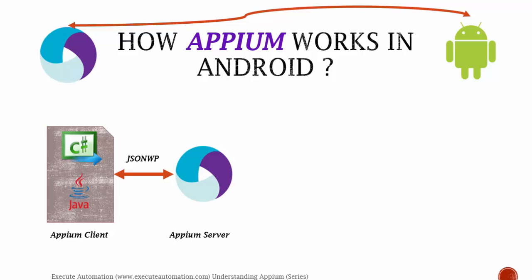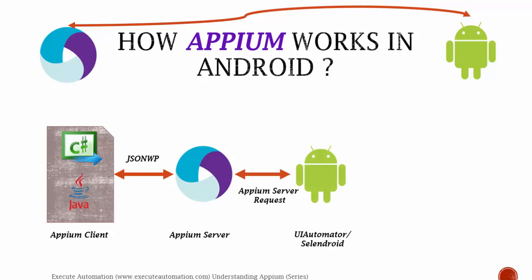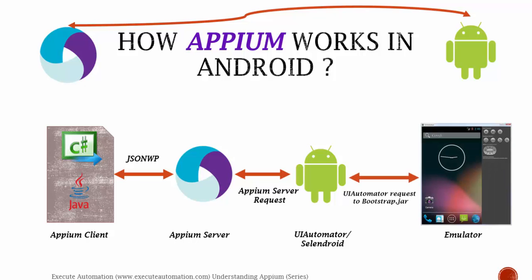The Appium server then invokes the vendor-provided framework, which in turn invokes the request to the actual emulator or physical device. This physical device will have something called bootstrap.jar, and this bootstrap.jar performs all the magic for you. Once it does the operation, it sends the response back to UI Automator, and the response travels all the way back from UI Automator to Appium server to the Appium client. In a nutshell: Appium client → Appium server → UI Automator → emulator. That is how Appium works in Android.